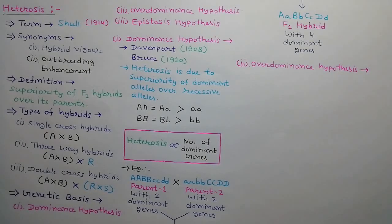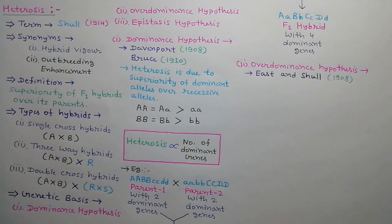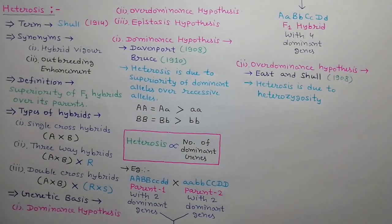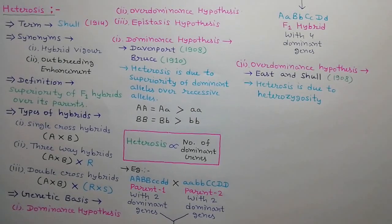Next is the Over-dominance Hypothesis, which was given by East and Schull independently in 1908. According to this hypothesis, heterosis is developed due to heterozygosity. In the heterozygous condition, dominant alleles show over-expression as compared to the homozygous dominant condition. This is called over-dominance.